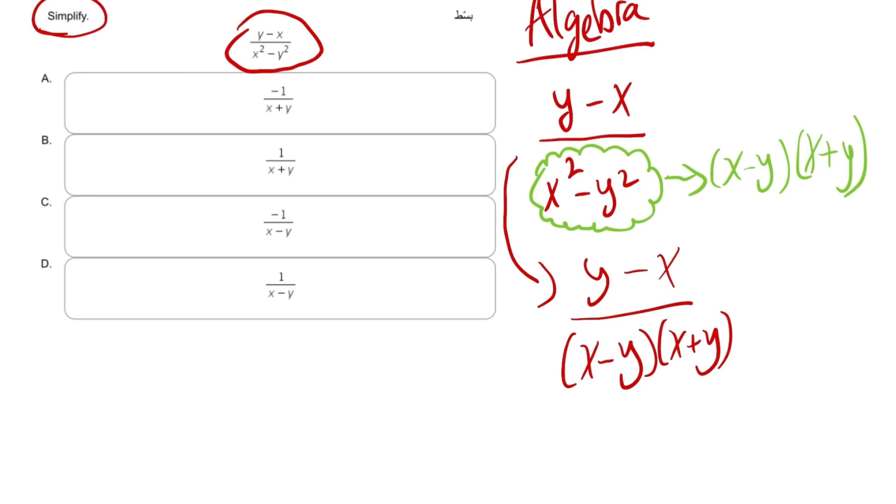Now rewrite the form: y minus x over x minus y into x plus y, exactly as per the difference of two squares. Now you should notice at this current point there's something similar between the numerator, the top part, and the denominator, the bottom part.